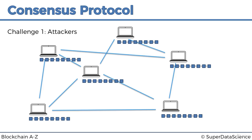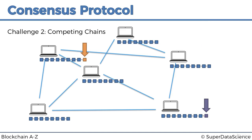The problem we're actually talking about here is what happens if an attacker tries to put a malicious block at the end of the chain. The second challenge is competing chains. In a large distributed blockchain, there can be lag between nodes — especially those far apart — and it can happen that two distant nodes successfully mine a block at the same time.